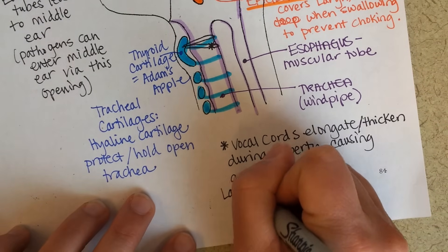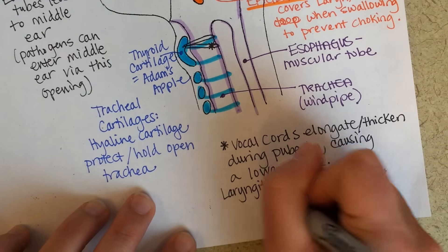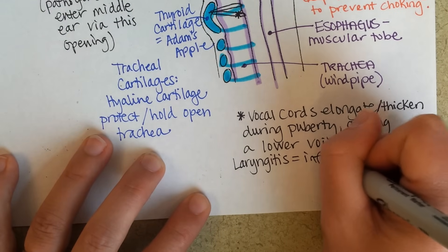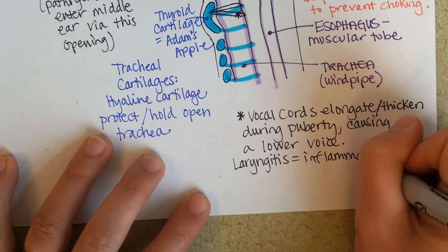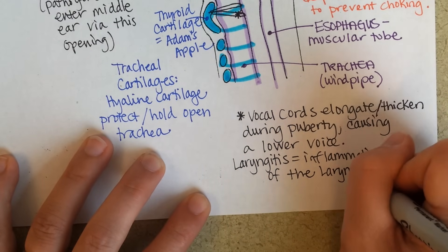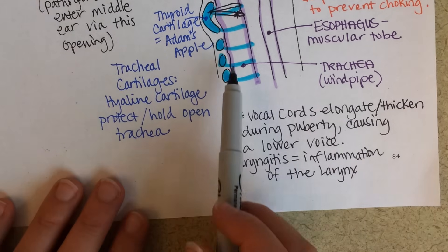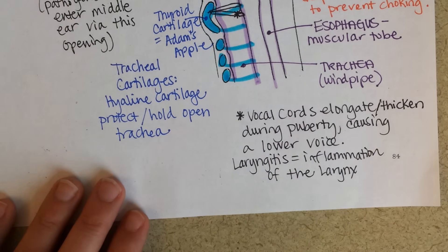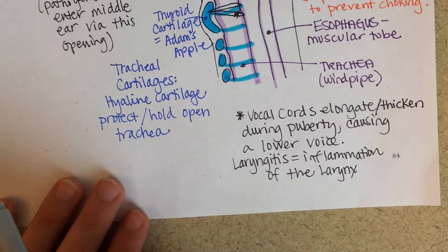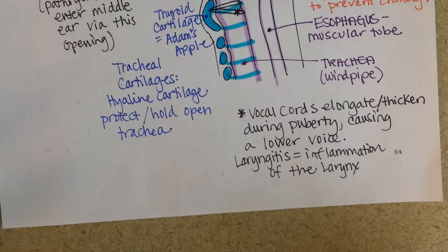Laryngitis is inflammation of the larynx. This can happen either if a lot of mucus gets caught on the vocal cords, or if they are just inflamed themselves. It can make it so they're not able to tighten and relax as needed, so you can't make the sounds required for speech or to be heard.